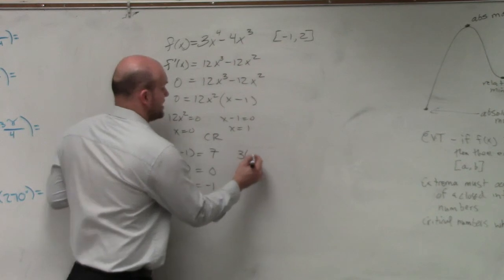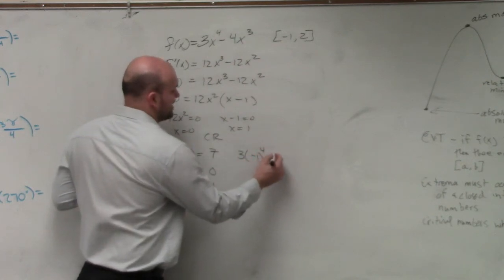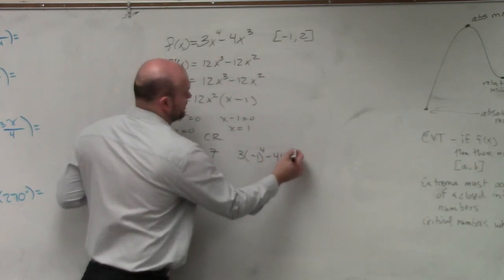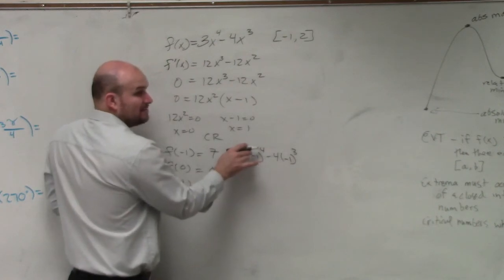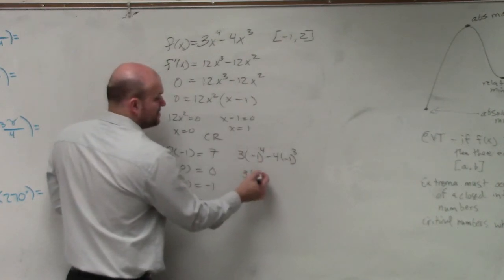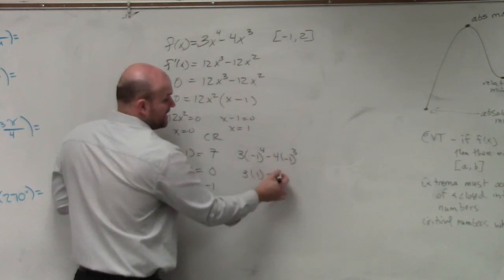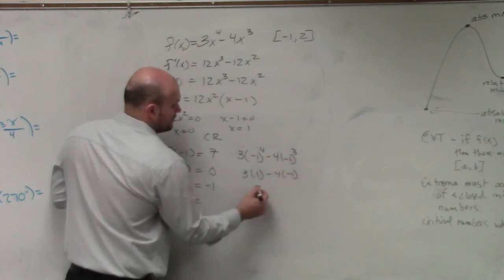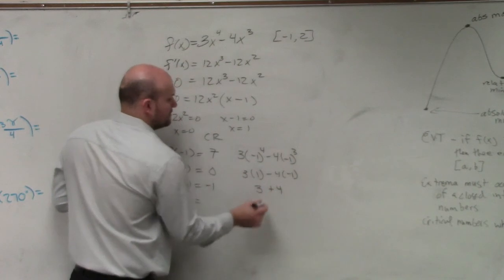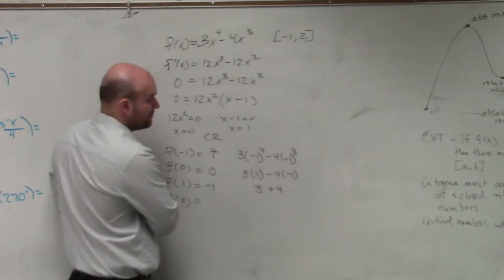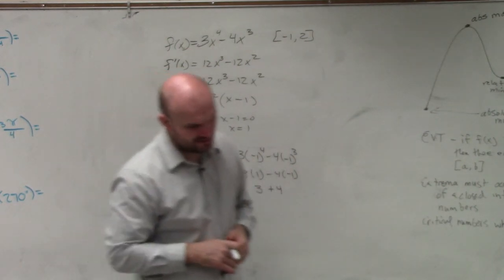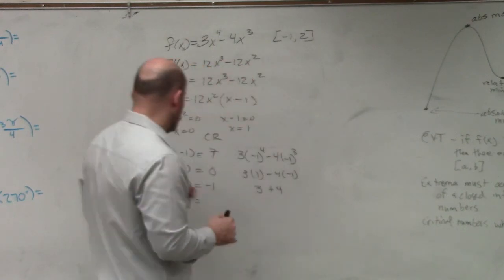So we do 3 times negative 1 to the fourth power minus 4 times negative 1 cubed. Negative 1 multiplied by itself four times is going to be a positive 1. Negative 1 multiplied by itself three times is going to give you a negative 1. Negative 4 times negative 1 would be a positive 4. That was probably a small mistake there. And so when I do f of 2, I get 16.